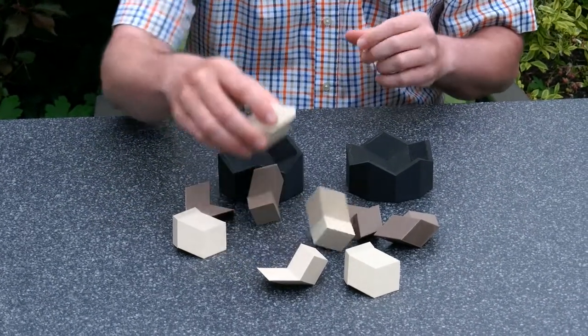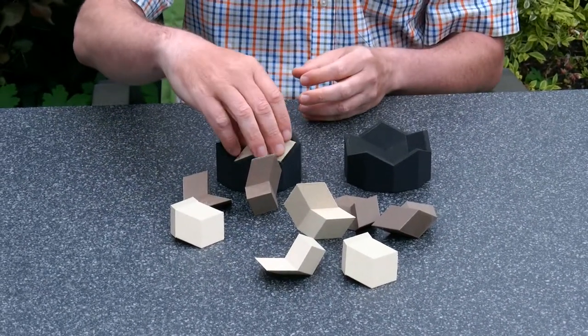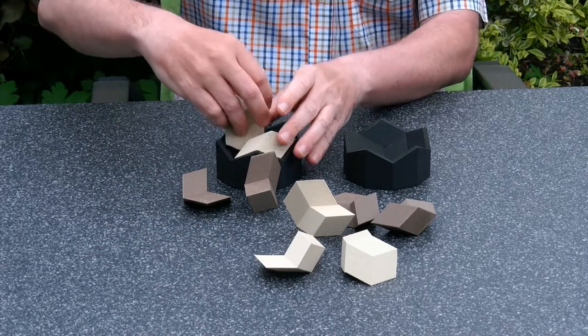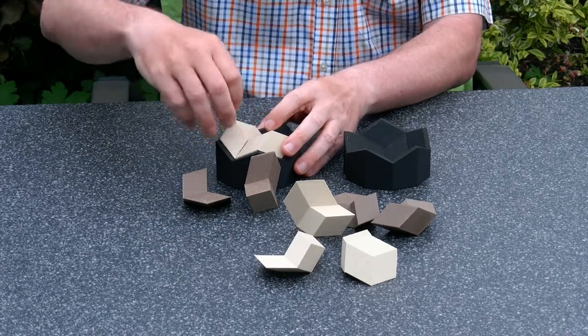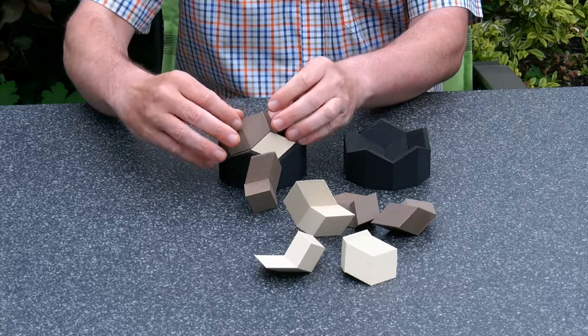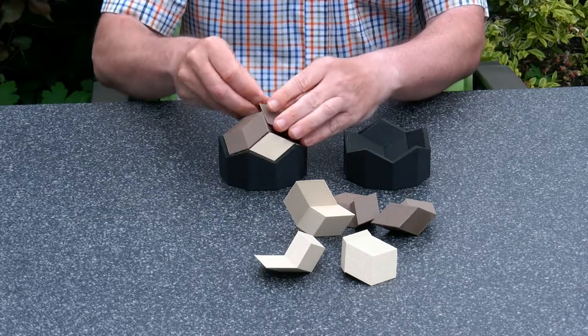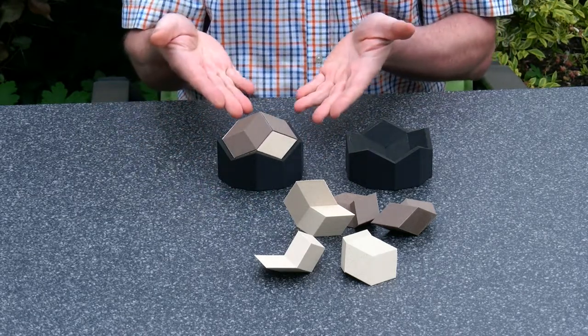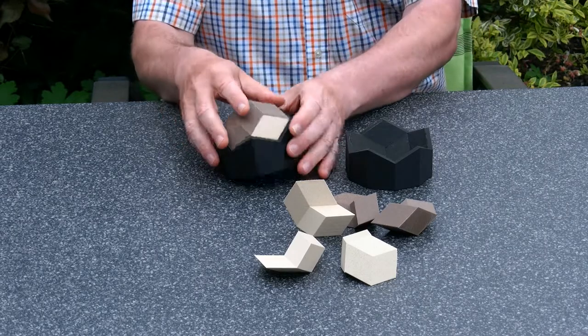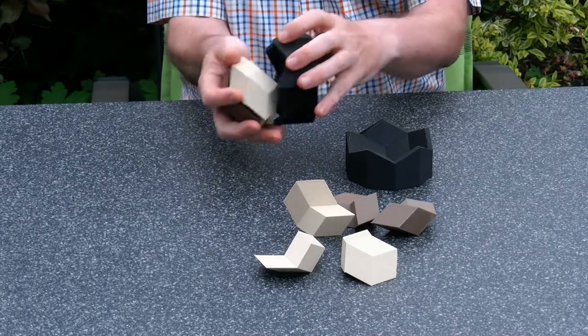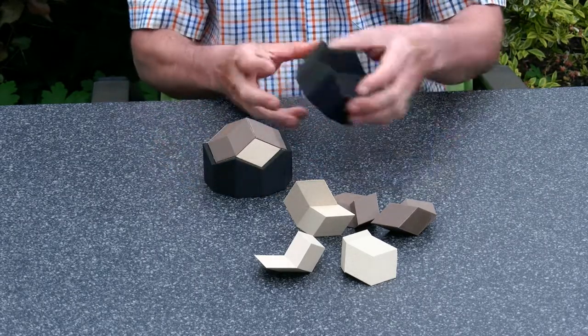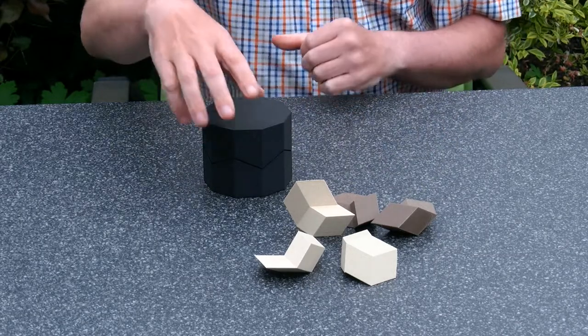And so he then showed, well, I can take some of these pieces and I can put them together. There we are. And I can make a rhombic icosahedron, which is this shape. And you see now everything fits.